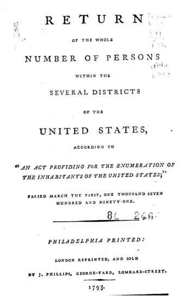The 1920 census questionnaire was similar to 1910, but excluded a separate schedule for American Indians. 'Hin,' 'Kor,' and 'Fil' were also added to the 'Colour or Race' question, signifying Hindustani (South Asian Indian), Korean, and Filipino, respectively.